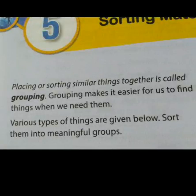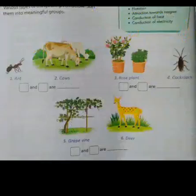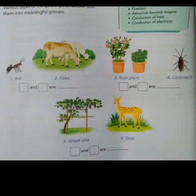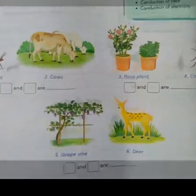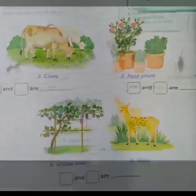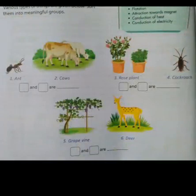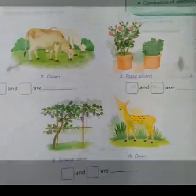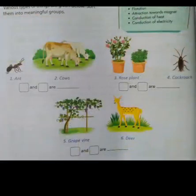Grouping makes it easier for us to find things when we need them because we place or sort similar things together. For example, we are going to sort these things into meaningful groups. Ant and cockroach are insects. Cows and deer are animals. Roast plant and grapevine are plants.